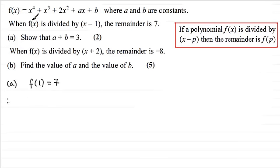So if we put 1 through here, we're going to get 1 to the power 4, which is 1, plus 1 cubed, which is 1, plus 2 times 1 squared, so that's going to be 2. And then you've got plus a times 1, which is a, and then plus the b, and that's got to equal the remainder 7. So what we've got here is a total of 4 here. Subtract 4 from both sides, and you get 7 take away 4, which is 3.